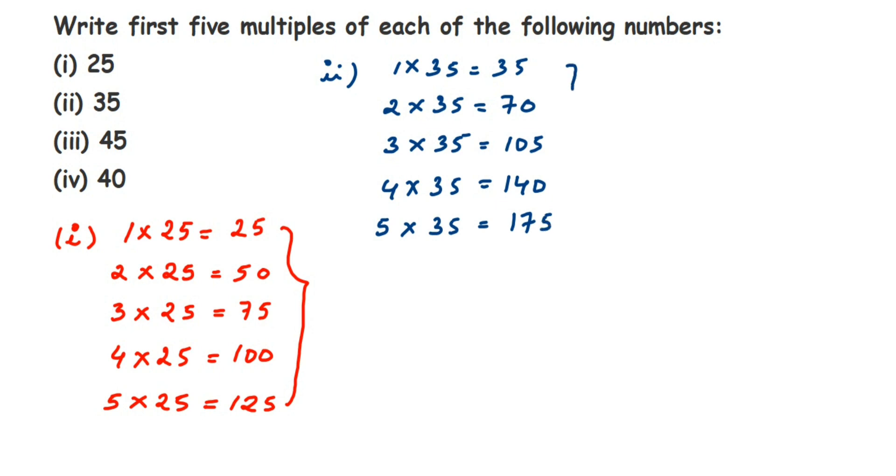So here 35, 70, 105, 140, 175. Then the next number is 45. So the third one - 1 into 45 is equal to 45. 2 into 45 - you can find the multiples of this given number. You can pause the video, you can do this by yourself, you can come back and check the answer.